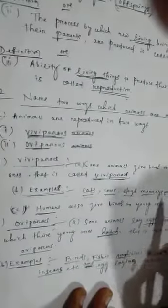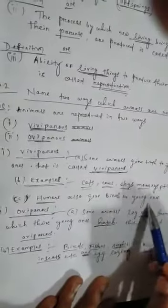And examples: cats, cows, dogs, monkeys, etc. Humans also give birth to young ones.